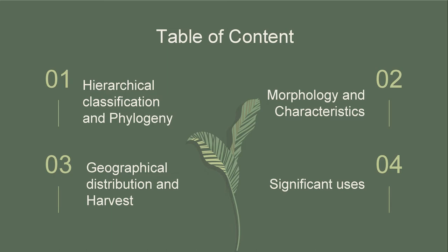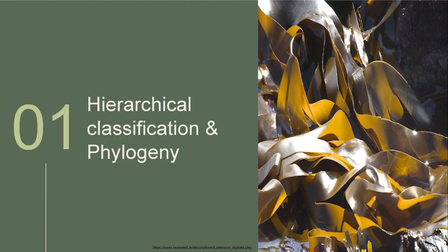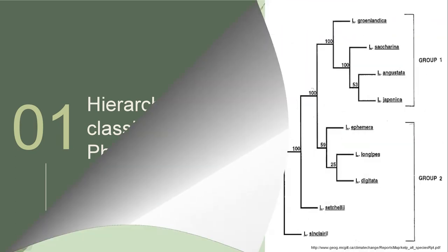First, we're going to discuss the hierarchical classification and phylogeny of our species, Laminaria digitata, followed by its morphology and characteristics, then its geographical distribution and harvest, and lastly, its significant uses. First, the hierarchical classification and phylogeny of Laminaria digitata.